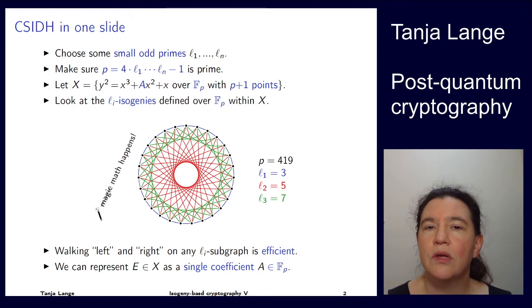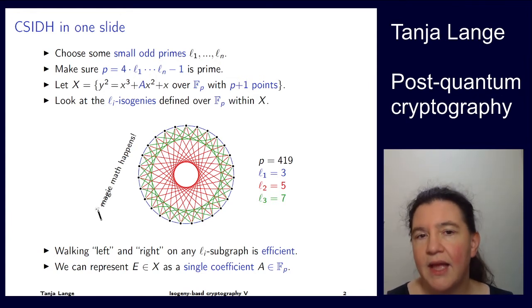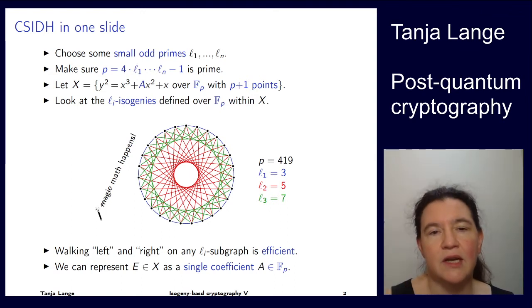If the group order is divisible by lᵢ, then we know that there are points of those orders because the l's are prime. There's a whole subgroup of order l₁ points and the same for all the other primes. Since an isogeny can be computed as soon as we have a subgroup of the right order, we can compute l₂ isogenies efficiently and walk left and right very efficiently.